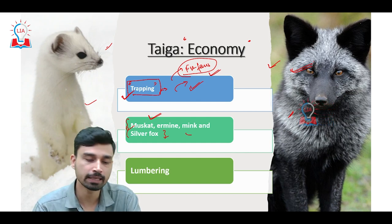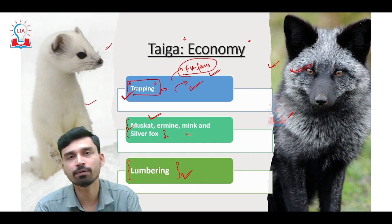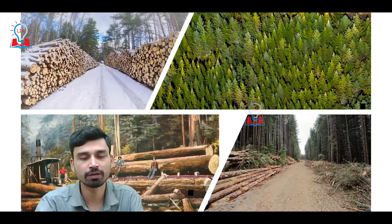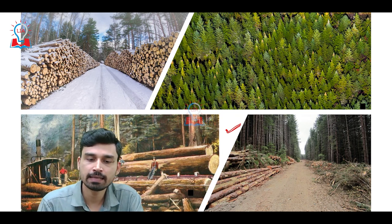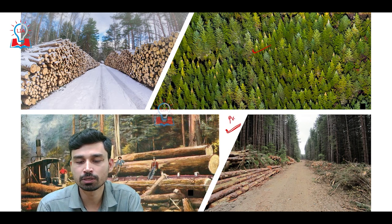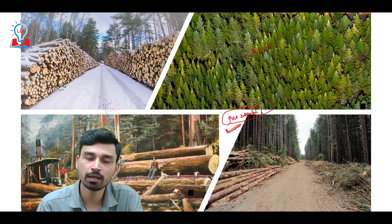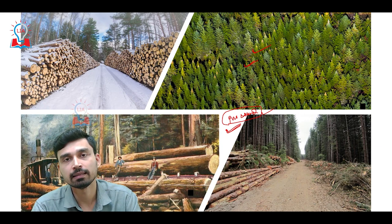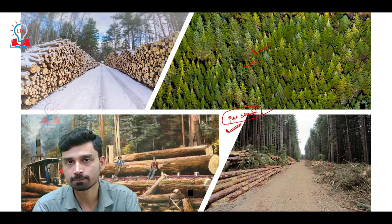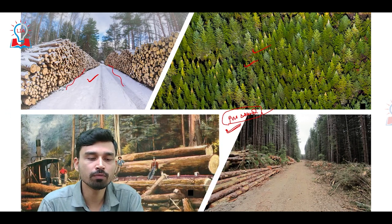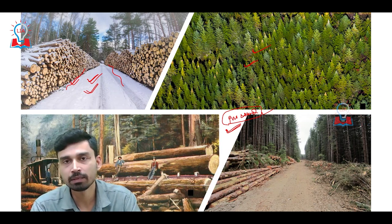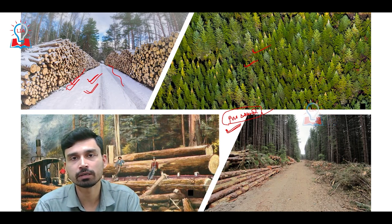The second major economic activity is lumbering — the cutting of trees in forests and selling the wood for various purposes. Lumbering is very important in the Taiga for several reasons. First, coniferous forests here are pure-stand forests, meaning a single species of trees dominates over thousands of hectares, greatly enhancing commercial utilization. Second, lumbering is done in winter when the forest floor is covered by snow, providing a slippery surface that makes it easier to move and transport the cut wood logs.